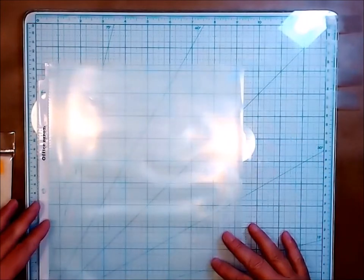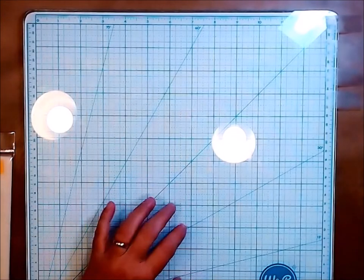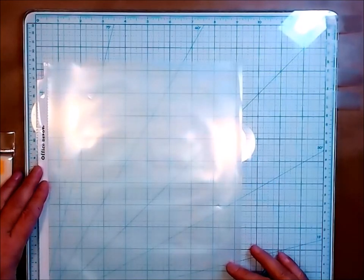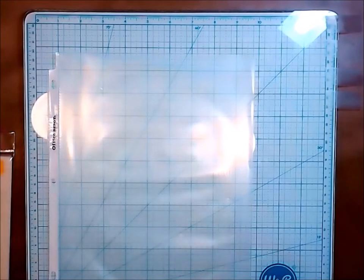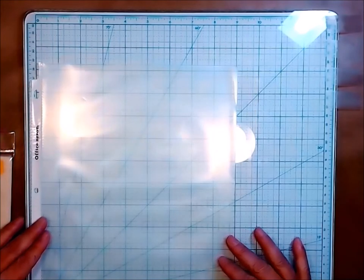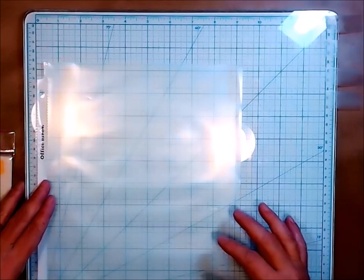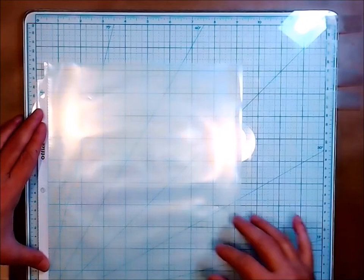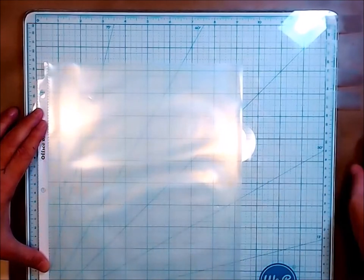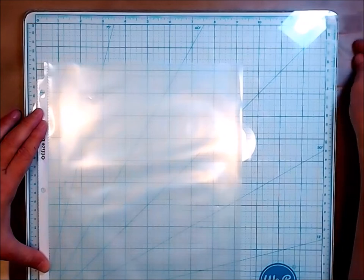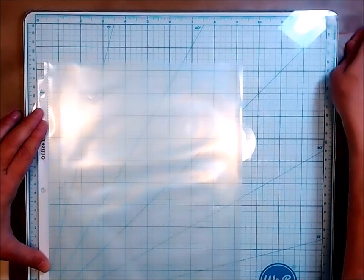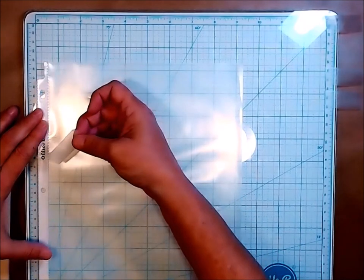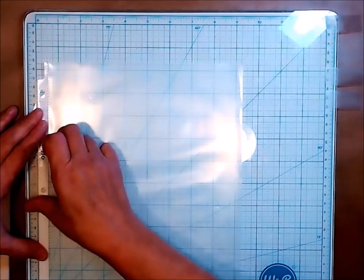This is a We Are Memory Keepers glass mat. What I'm going to do is line this up on this inside edge and this bottom edge, both of them closest to the inside. Make sure this is nice and even, and it is.